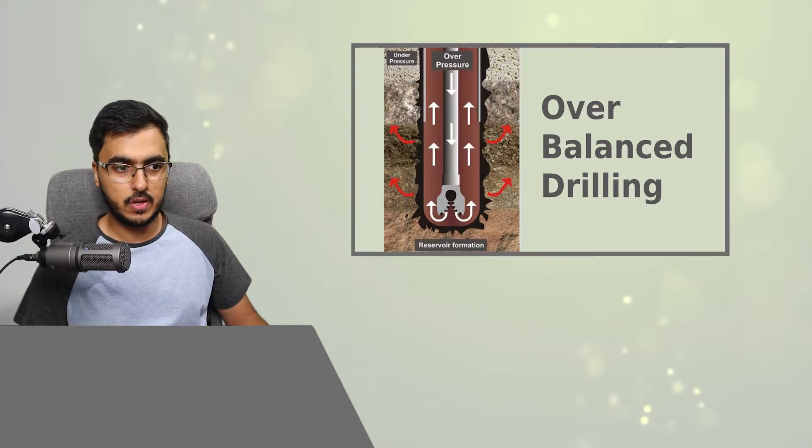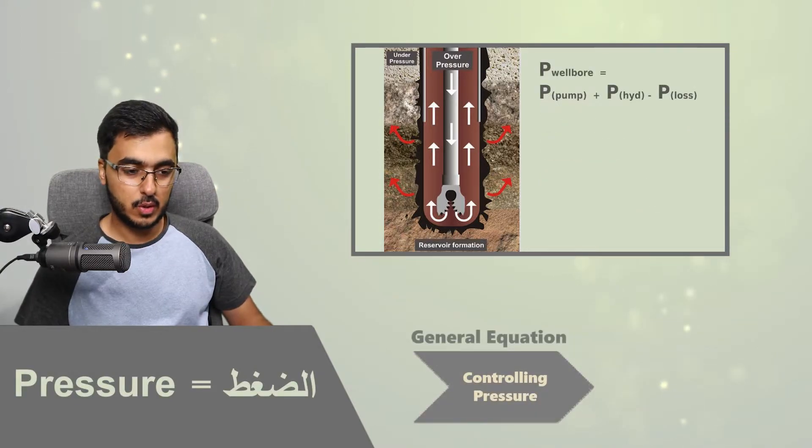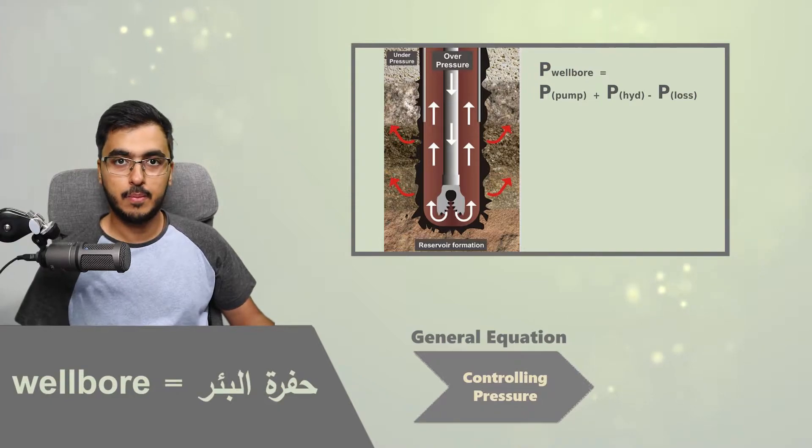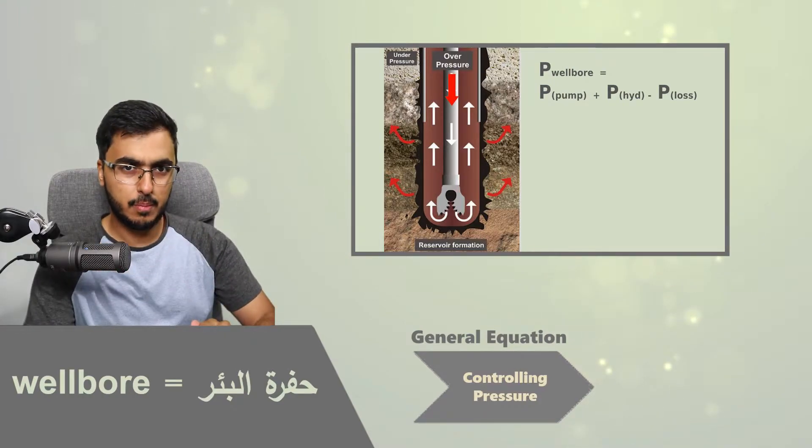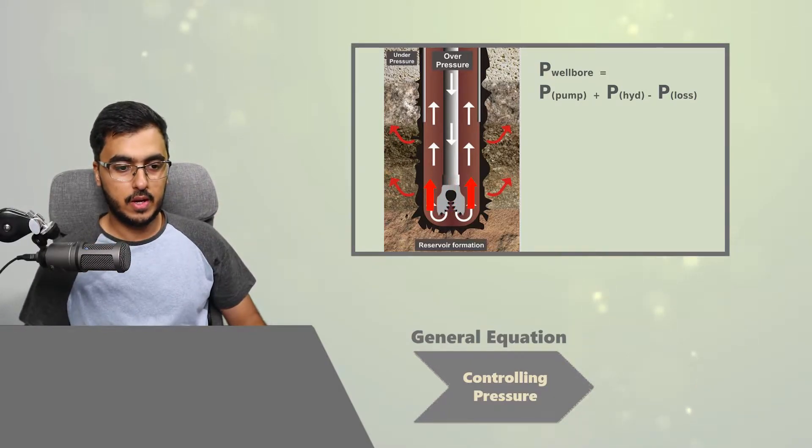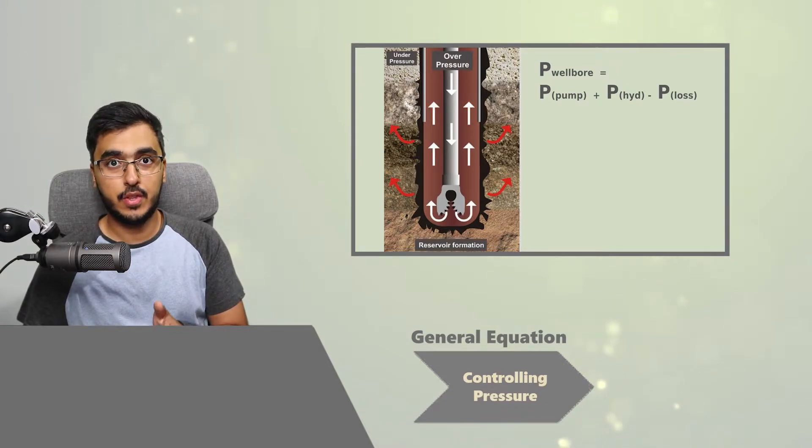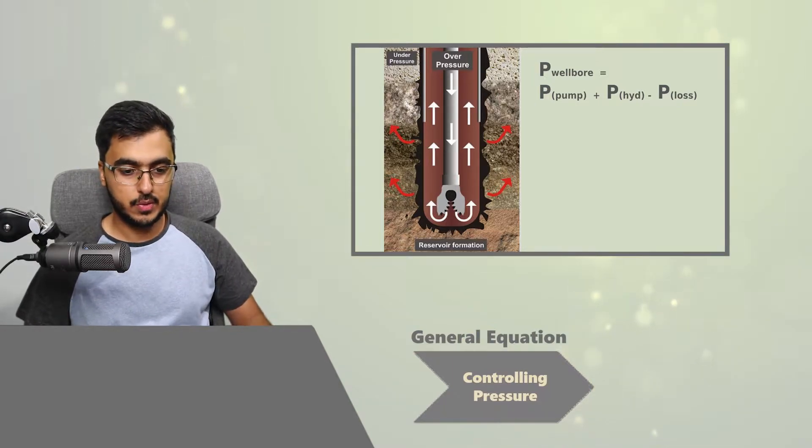Before we start talking about overbalanced drilling, we should start talking about controlling pressure or how do we control the wellbore pressure. A simple equation for wellbore pressure is the pump pressure, so the pressure exerted by the pump that's pumping the mud into the drill string through the drill bit up to the annulus towards the surface, plus the hydrostatic pressure of that mud minus the pressure loss. But we'll assume there's no pressure loss at the moment just for demonstration purposes.